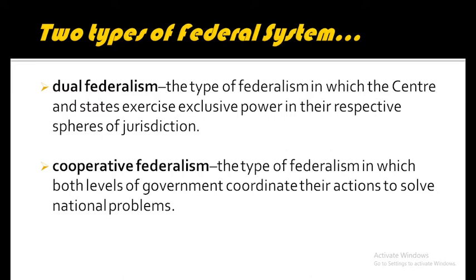In dual federalism, the center and states exercise exclusive power in their respective spheres of jurisdiction. One cannot interfere in the affairs of the other. In other words, there is strict division of power between the center and states. An example of dual federalism is the United States. But in cooperative federalism, both levels of government coordinate their actions to solve national problems — they cooperate and work hand in hand to solve common national problems.